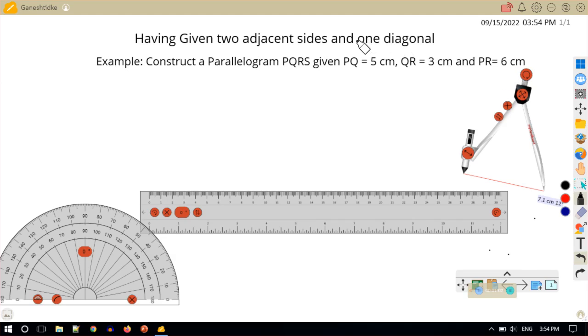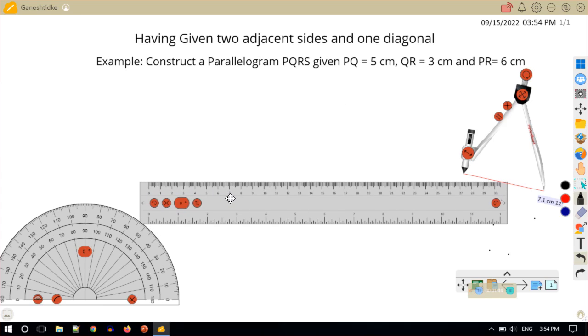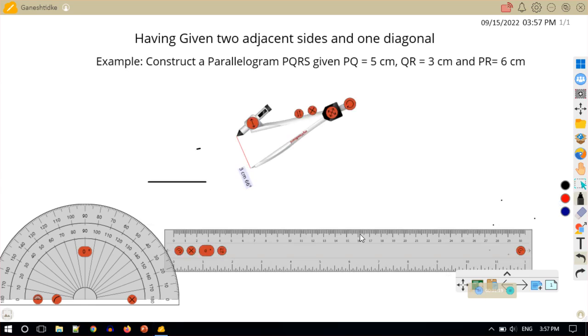So first we will draw PQ is equal to 5 centimeter. So we will construct this is our scale. I will take 0 as the reference, I will draw 5 centimeter. I will label this line segment as PQ, this is Q, the length is 5 centimeter.